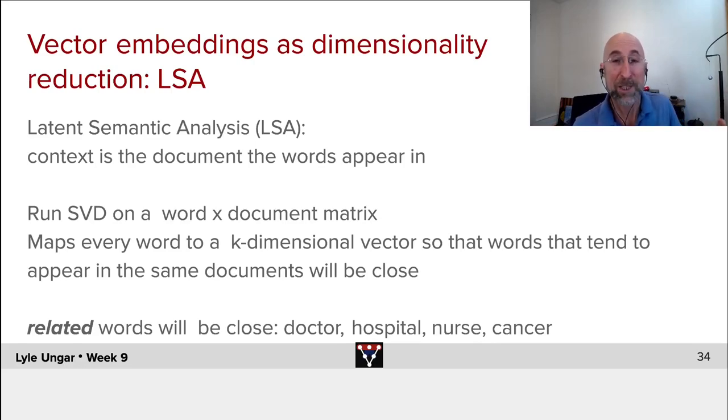They could be web pages or text messages. And we're going to take a big matrix of word by document. Every word. And for every document, is it in it or not, we will run singular value decomposition on this. We'll take this document times matrix times s transpose and run PCA, if you're more familiar with PCA.